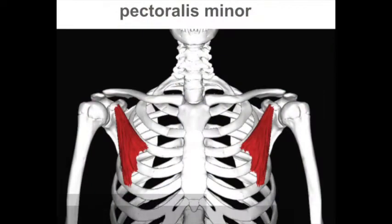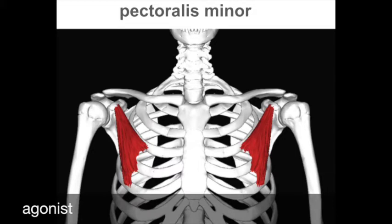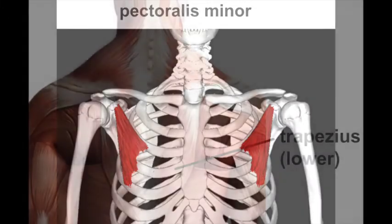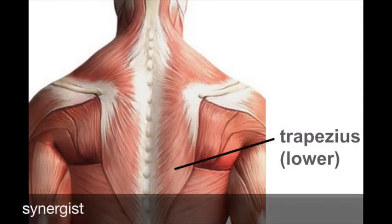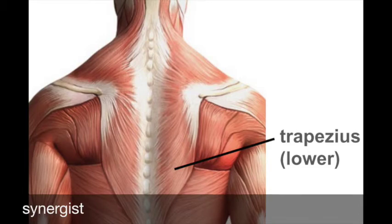The agonist or prime mover of scapular depression is the pectoralis minor. The pectoralis minor is deep to the pectoralis major. As you can see, it attaches to the scapula and ribs. Synergist or assisting muscle is the trapezius, but this time the lower fibers of the trapezius.